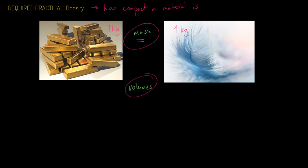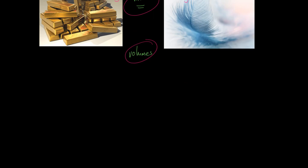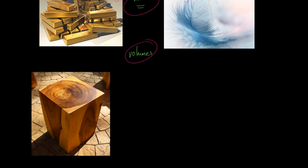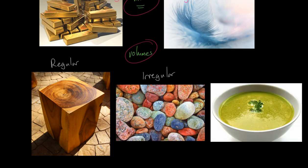In this required practical you have to work out the volume of three materials: a regular object — so like a cube — an irregular object, something without a nicely predefined shape such as a stone or a pebble, because they haven't got a defined shape, and then a liquid of some kind.